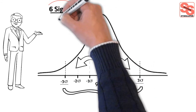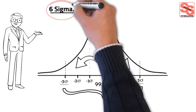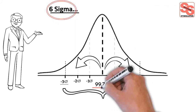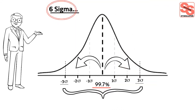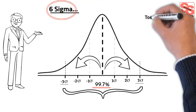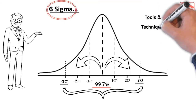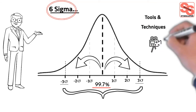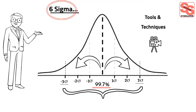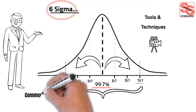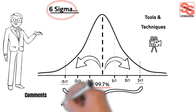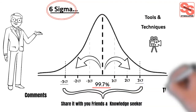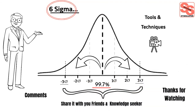Hope you have got a fair idea about why we say 6 sigma — basically to achieve 99.7% of success. There are many tools and techniques available in 6 sigma which we shall discuss in detail in upcoming videos. Please share your comments and suggestions for improvement, share it with your friends and knowledge seekers. Thanks for watching.